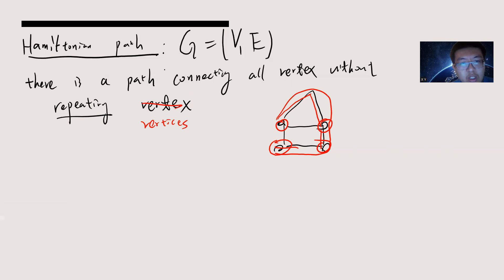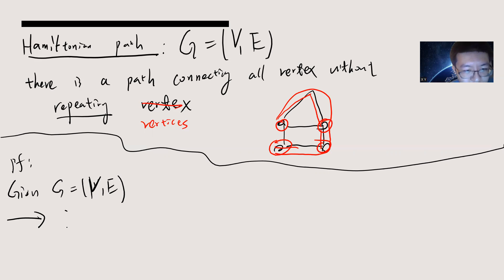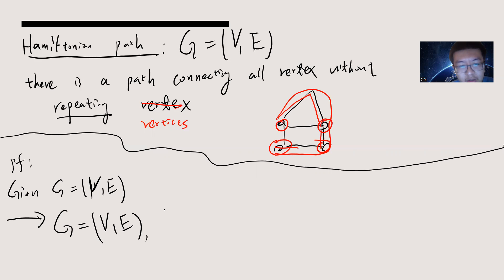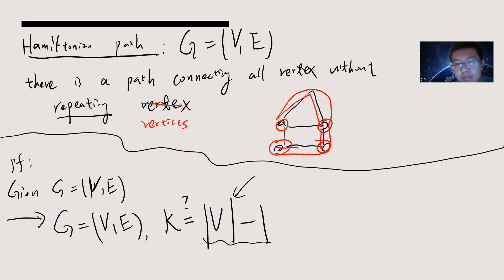The claim is simple — hopefully you can see why. For the reduction: given a graph G, we are asked about the Hamiltonian Path problem. We can change this to a Longest Path instance by creating another graph G' which is exactly the same, but we need to assign k. How do you assign k? Obviously, if there is a path connecting all vertices without repeating, then since we are not repeating vertices, the number of edges must be the number of vertices minus one. So k will just be |V| minus 1.